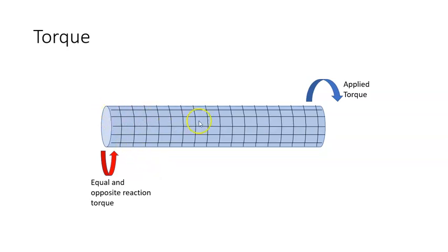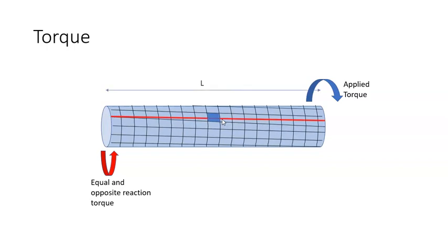So if we had these imaginary lines running around the shaft, when we would apply the torque, these would deform. So if you look at this rectangular area here, when we apply the torque, that will deform.